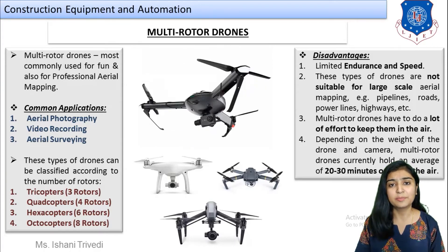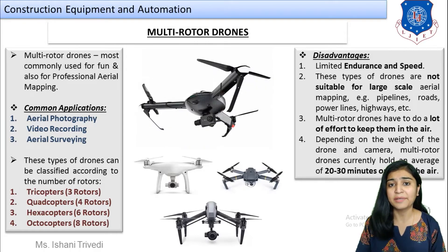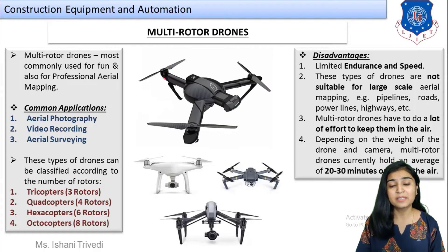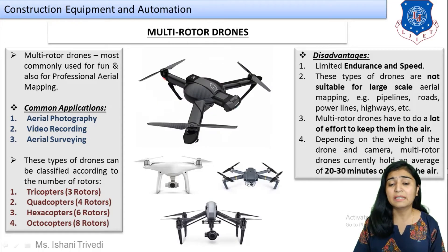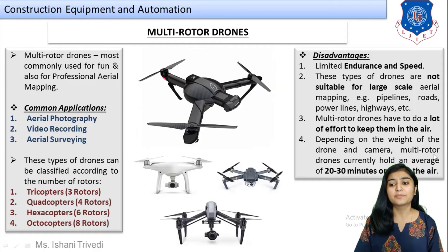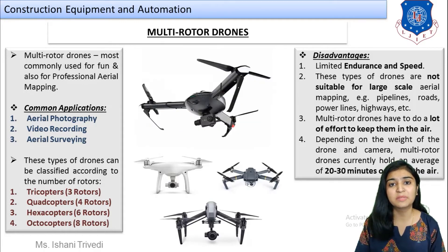These types of drones are not suitable for large-scale aerial mapping, as they cannot move over a very large space or large area. Speed is limited and weather conditions also affect them. So for the purpose of pipelines, roads, power lines and highways — meaning large-scale construction projects — you cannot use multi-rotor drones.